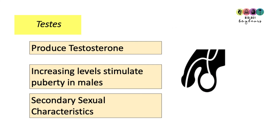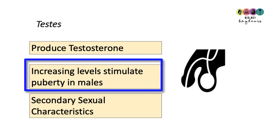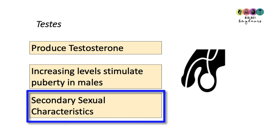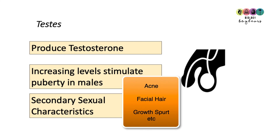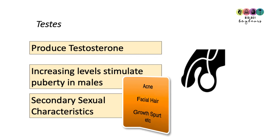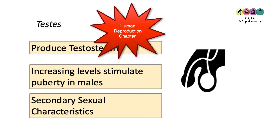The testes produce the hormone testosterone. An increase in testosterone production stimulates the onset of puberty in males, bringing with it secondary sexual characteristics. Testosterone is responsible for all characteristics associated with puberty: the growth spurt, facial hair, and the increase in oil production. We'll learn much more about this in human reproduction.